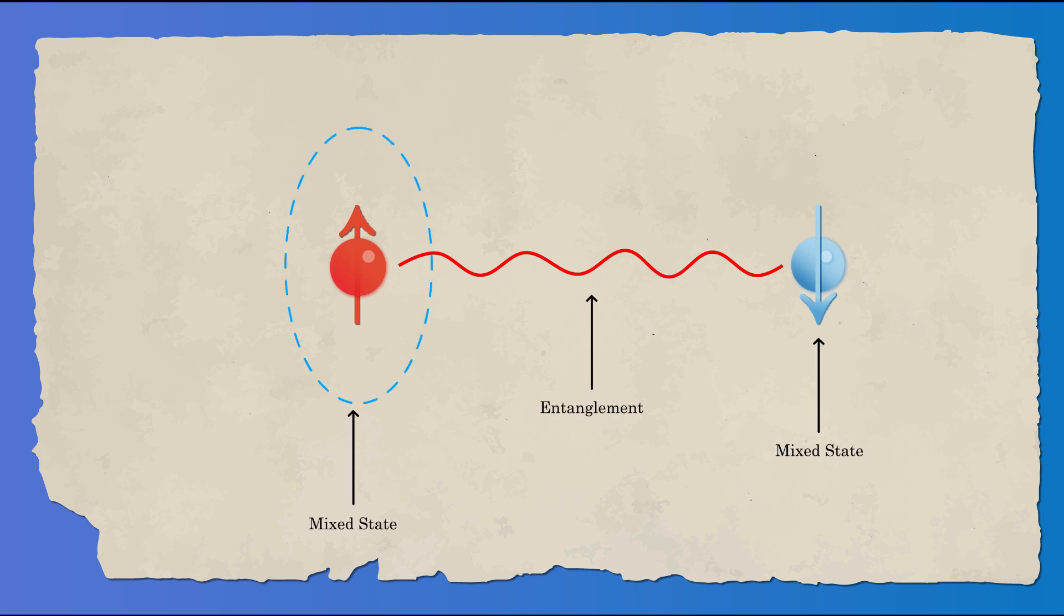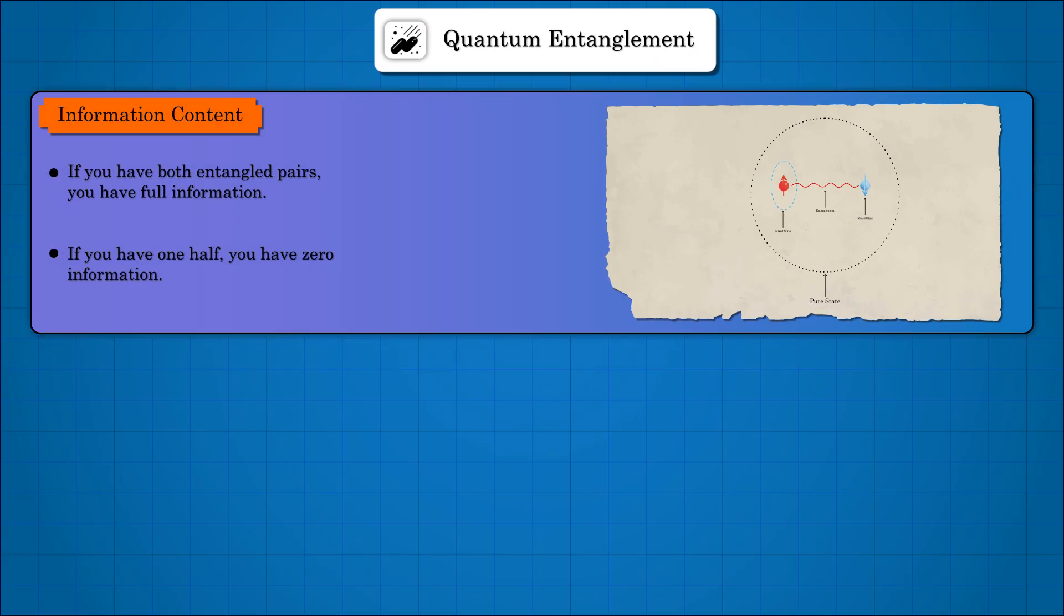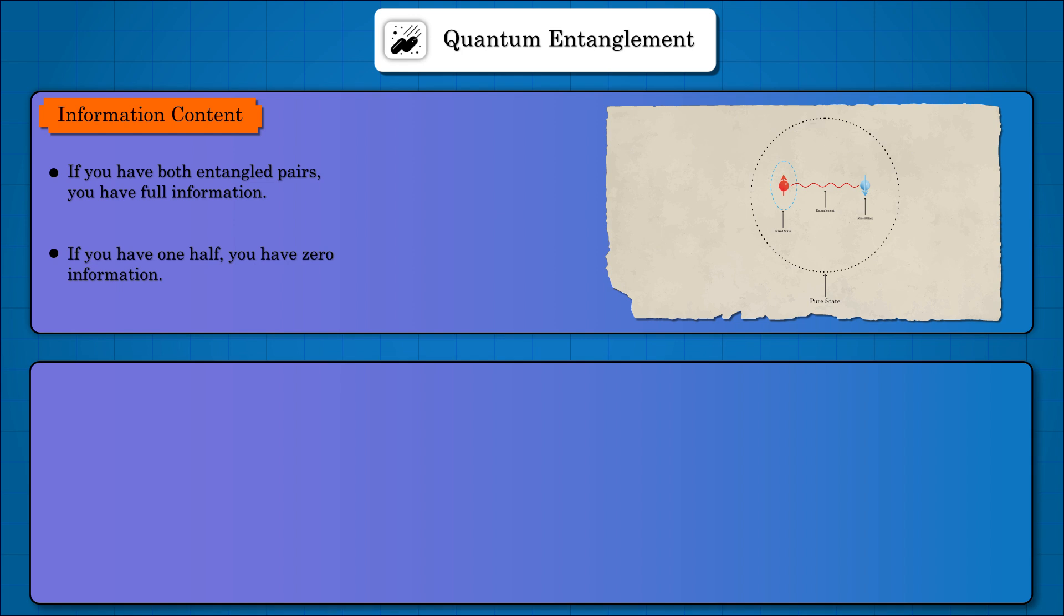For example, if you consider one half of an entangled pair, its position and momentum are highly uncertain until you also have information about its entangled partner. We need to fix some jargon terms. The total entangled system is called the pure state.